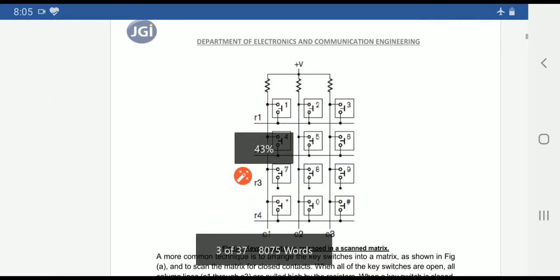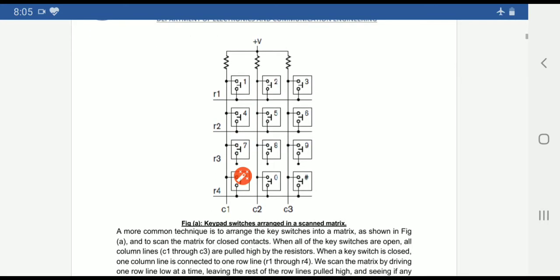I have taken one small example here to understand the working of keypad. This is a keypad switch arranged in a scanned matrix. It looks like a matrix with 4 rows R1 to R4 and 3 columns C1 to C3. Here, columns are controlled by these registers.